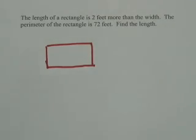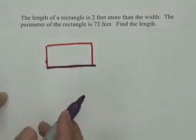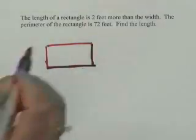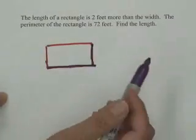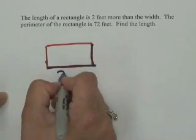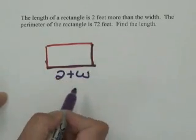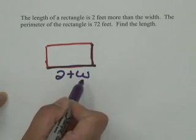It's telling me that the length, which is this side, is two feet more than this side, than the width. They didn't actually tell us anything about the width, so I'm going to represent two feet more than the width by 2+W. Two feet more than, that's your addition, the width. W is for width.